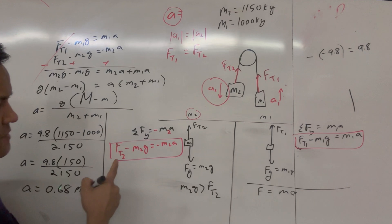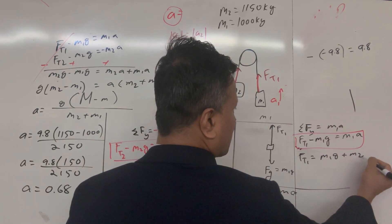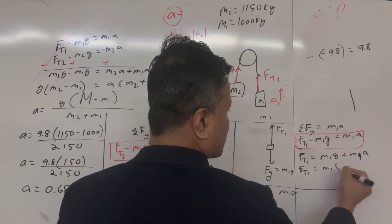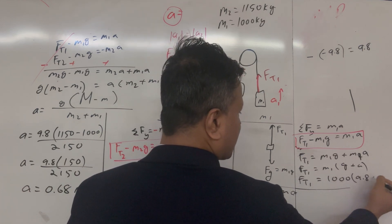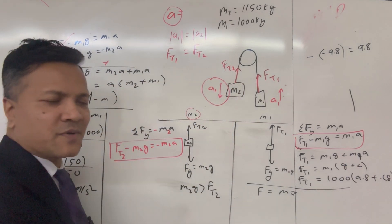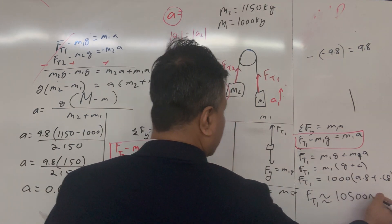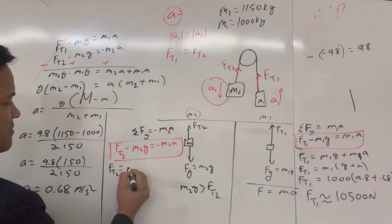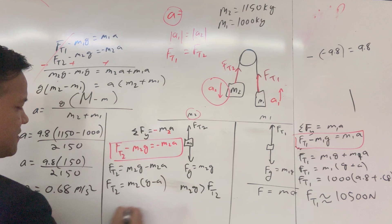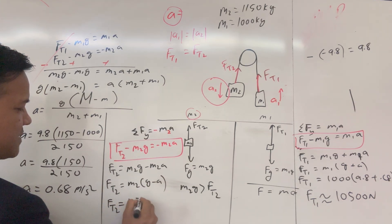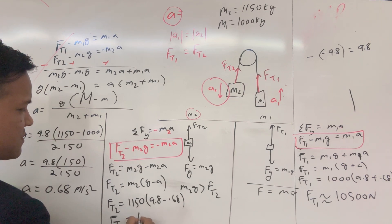Now we find the tension. FT1 = M1(G + A) = 1000 × (9.8 + 0.68) ≈ 10,500 N. FT2 = M2(G minus A) = 1150 × (9.8 minus 0.68) ≈ 10,500 N. Both tensions are approximately equal, which confirms the solution.